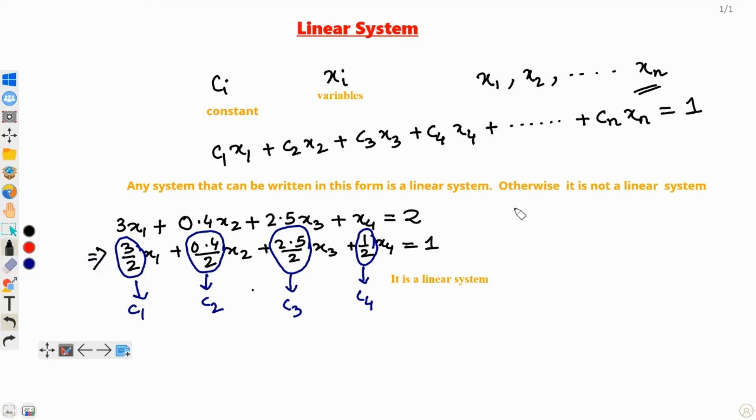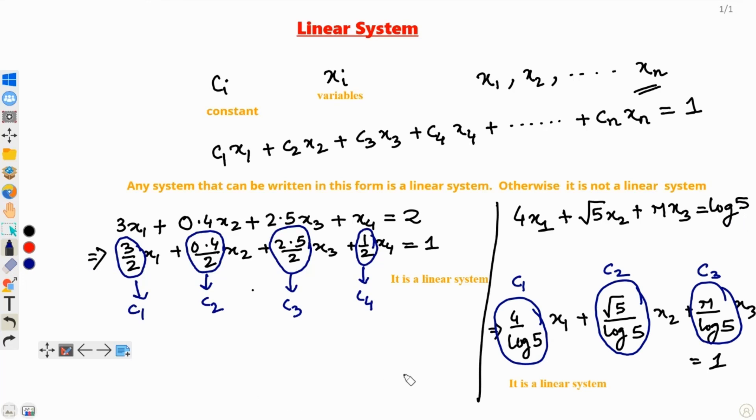Let us take another example. 4X1 plus radical 5X2 plus pi X3 equals log of 5. In this case also, this is perfectly fine. Remember, a number or square root is just a number. Therefore, radical 5 is not any issue here. It is a real number. A number whether real or complex, as long as it is a number and it is not a function of a different variable, it is a linear system. Similarly, pi, it is just a real number. Logarithm of 5, it is just a real number. This is also a linear system. In all this case, we already have written the form that we like and the form that we defined it by.